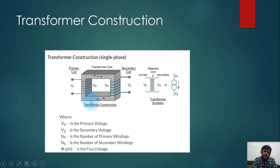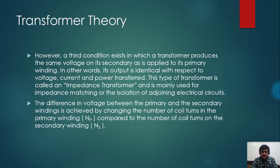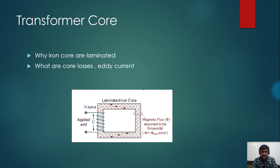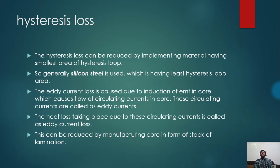This circulating current will heat up the core. The disadvantages are: it is a loss, it heats up the transformer unnecessarily which can damage it, and it limits the transformer's ability to transfer energy while increasing losses. The solution is to increase the resistance of the core so the eddy current is reduced. This is why the transformer core is made as a stack of laminations — using a laminated core.